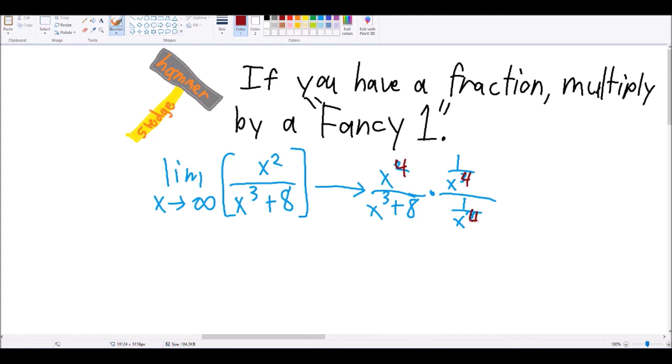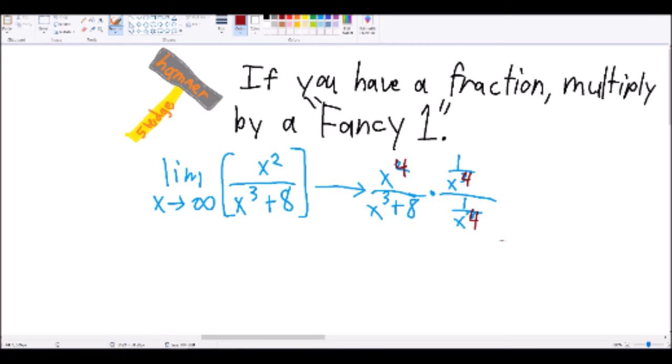Just make the 3 in the fancy fraction equal to the highest exponent of the equation. So, if the numerator was an x to the fourth, the equation should be, the fancy version of 1 should be 1 over x to the fourth, all divided by 1 over x to the fourth in the fancy fraction.